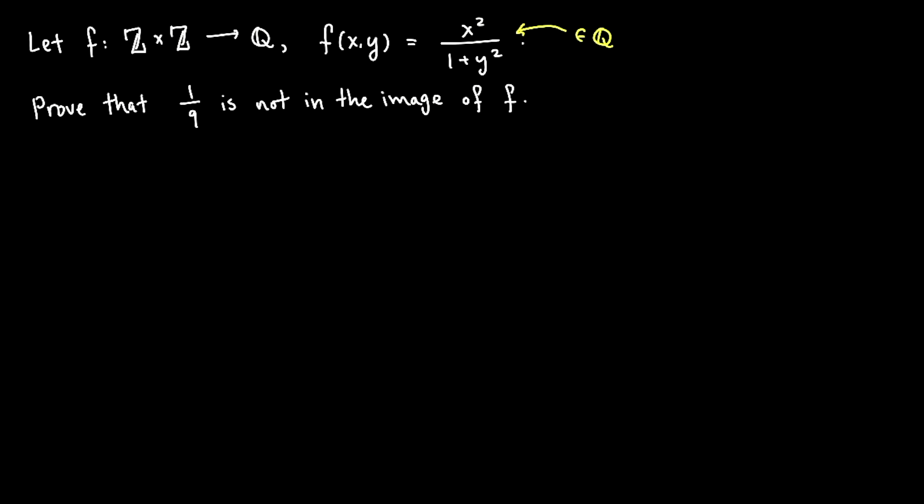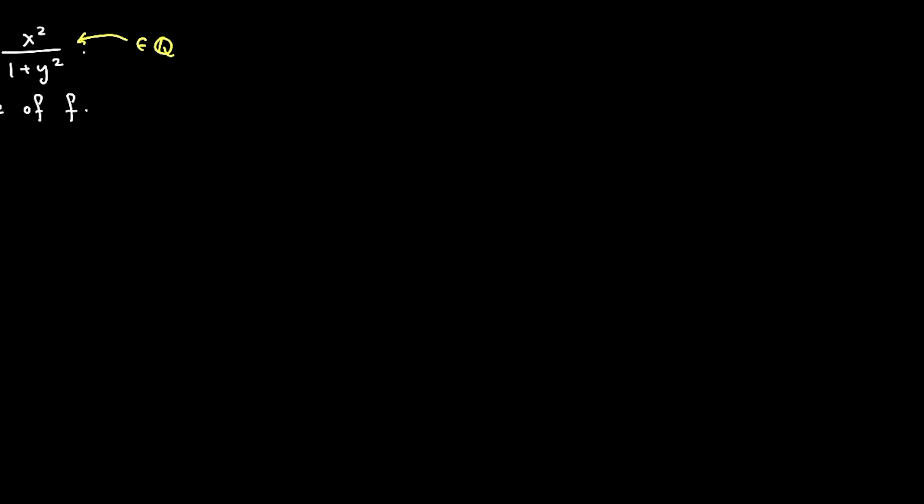So I've got a rational number here. This expression definitely defines a rational number. Okay, so the function makes sense. Prove that 1 over 9 is not in the image. So let me remind you a little bit what image means.